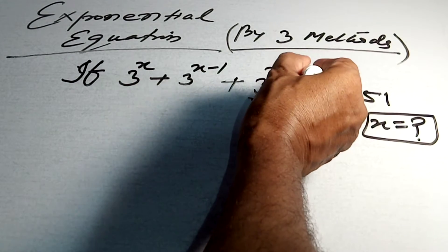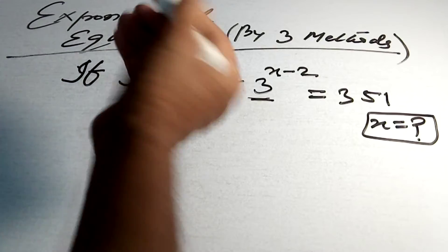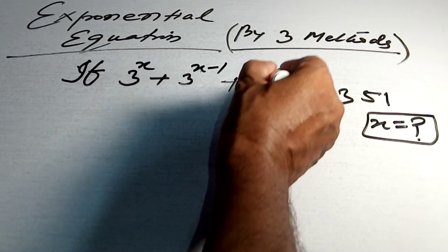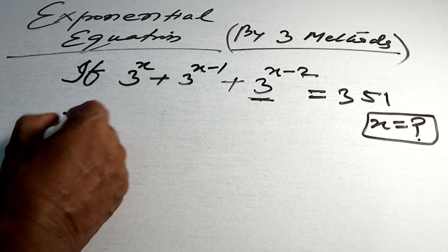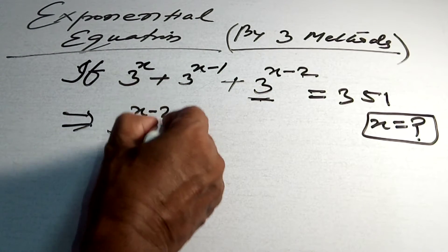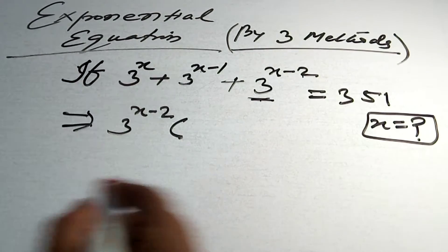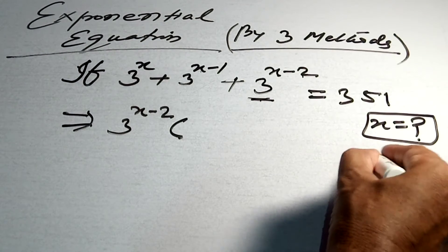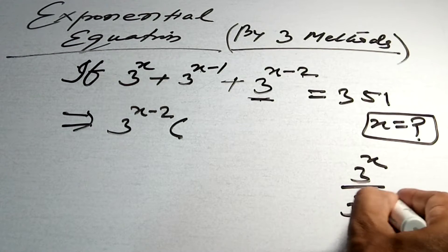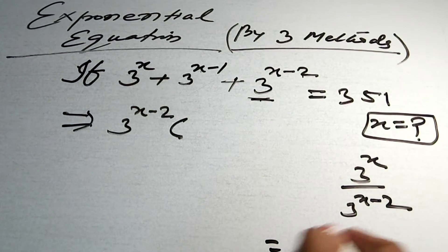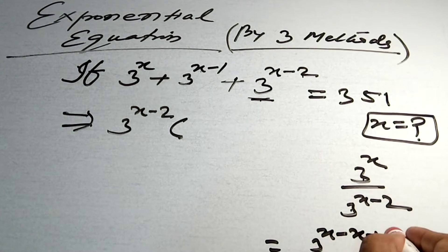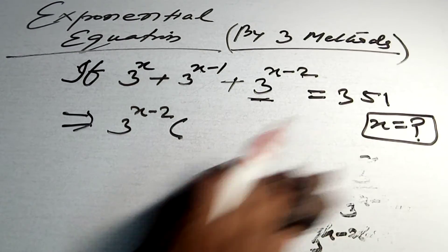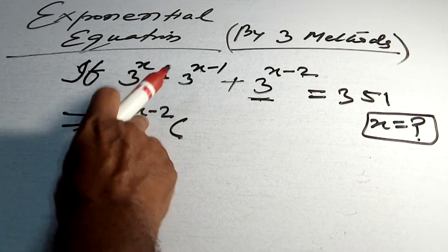The lowest term among the three is 3 to the power x minus 2. Take the lowest term as common. Taking common means division — so 3 to the power x divided by 3 to the power x minus 2. As per the rule of indices, this gives 3 to the power 2 after cancellation.